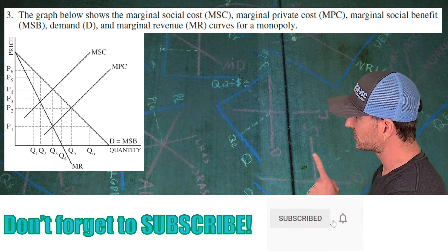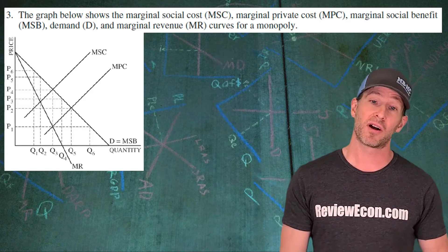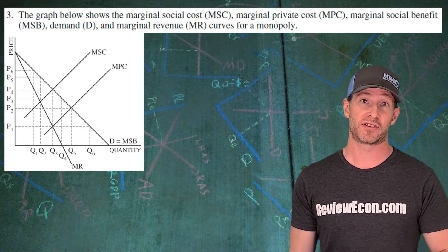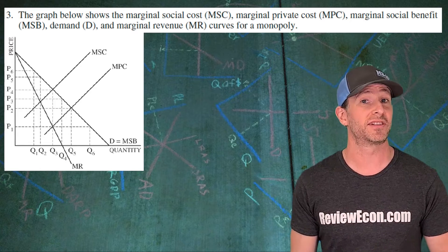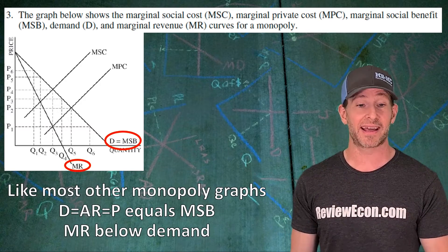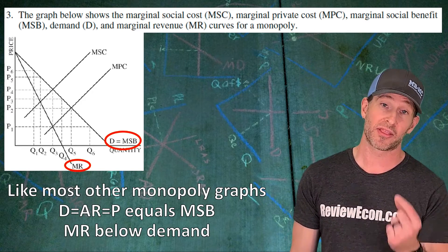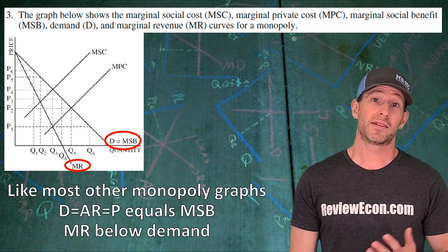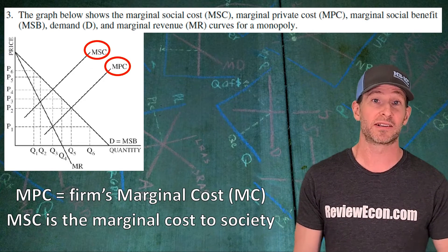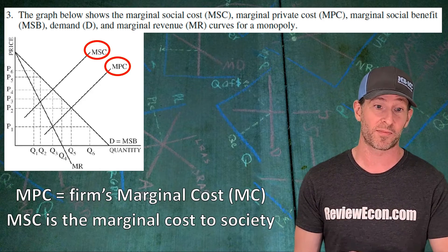We have an interesting graph here. We have the marginal social cost labeled MSC, the marginal private cost labeled MPC, the marginal social benefit labeled MSB, and the demand along with the marginal revenue curve for monopoly. Like most other monopoly graphs, we have the demand, average revenue, and price — equal to the marginal social benefit — and the marginal revenue curve is below the demand. The difference here is that we have two upward sloping marginal cost curves: the lower one is the marginal private cost, and the higher one is the marginal social cost — the cost to society for the product as a whole.